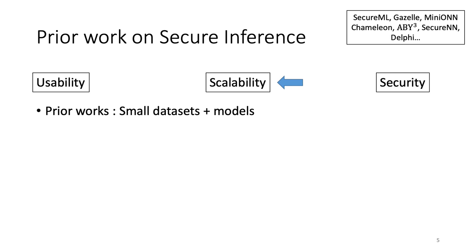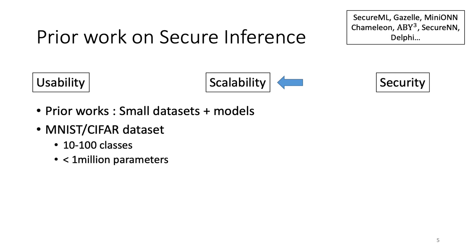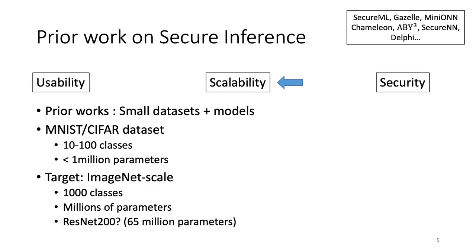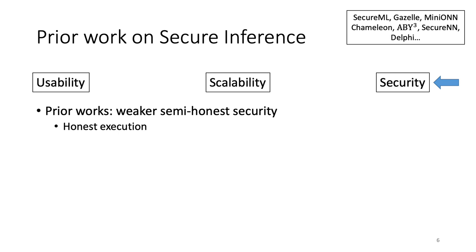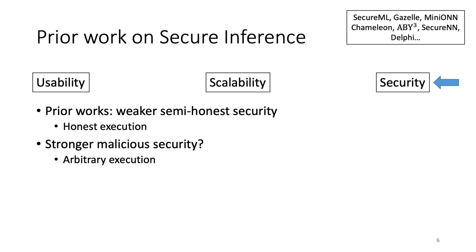In terms of scalability, prior works have worked with small datasets and models — datasets like MNIST or CIFAR with 10 to 100 classes and networks with less than a million parameters. Ideally, we would like to work at the scale of ImageNet with around 1000 classes and networks like ResNet 200, which has around 65 million parameters. The third dimension is security. Prior works have mostly worked in the weaker semi-honest security model where parties follow the protocol honestly, whereas we want the stronger malicious security model where even if participants arbitrarily deviate from the protocol, security still holds.